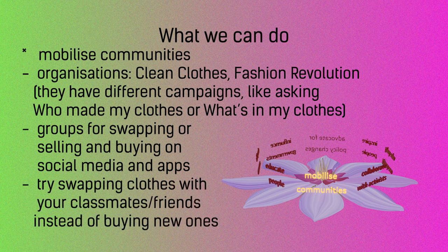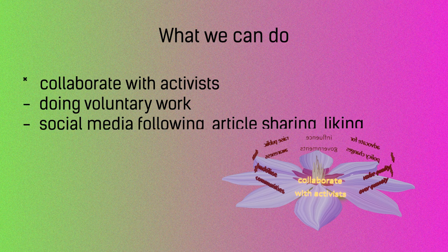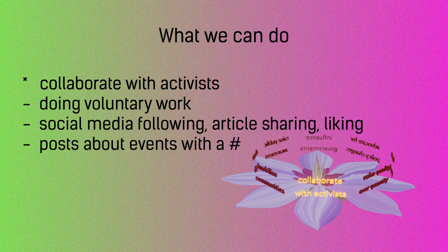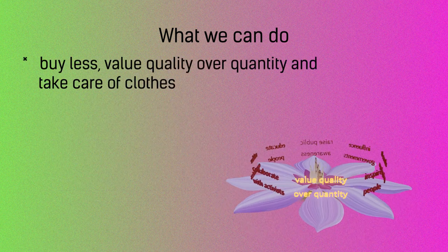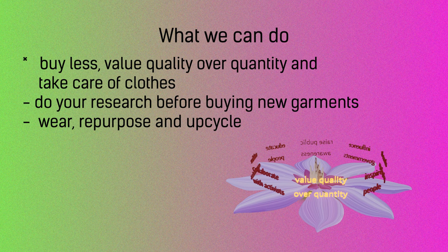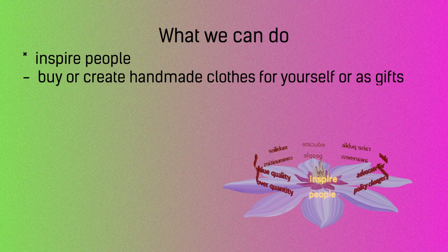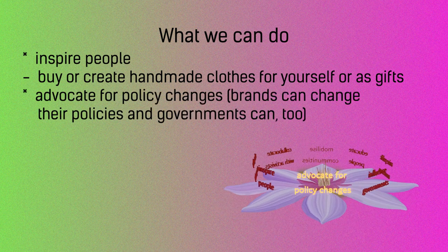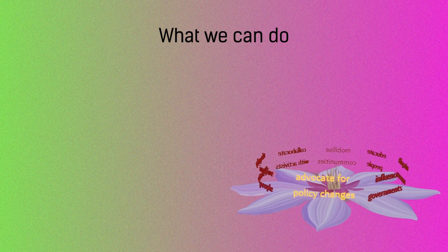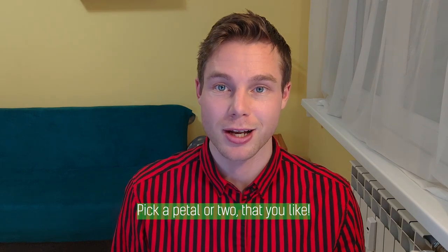Try swapping clothes with your classmates and friends instead of buying new ones. Collaborate with activists through voluntary work, social media following, article sharing, liking, and posting about events with a hashtag. Buy less and value quality over quantity. Take care of clothes — do your research before buying new garments. Wear, repurpose, and upcycle. Repair your clothes. Inspire people by buying or creating handmade clothes for yourself or as gifts. Advocate for policy changes — brands can change their policies and governments can too. Follow the platforms where they can announce changes. Influence governments to play an active role in making laws and regulations in the textile industry. Sign petitions. Now it's your turn — pick a petal or two that you like.